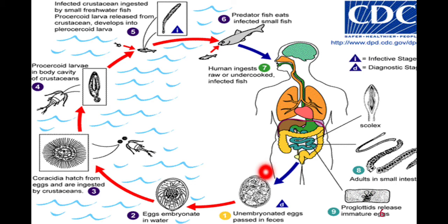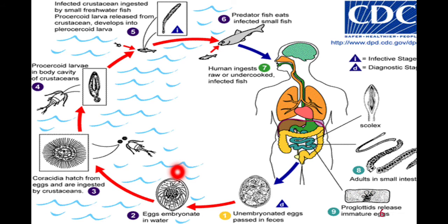These eggs are un-embryonated, meaning that at this stage no embryo has formed inside the eggs, so they are not infective at this point. For embryonation to occur, these eggs passed out in human feces must reach fresh water. When un-embryonated eggs reach fresh water, they become embryonated, and larvae known as coracidia hatch from the eggs inside the fresh water.